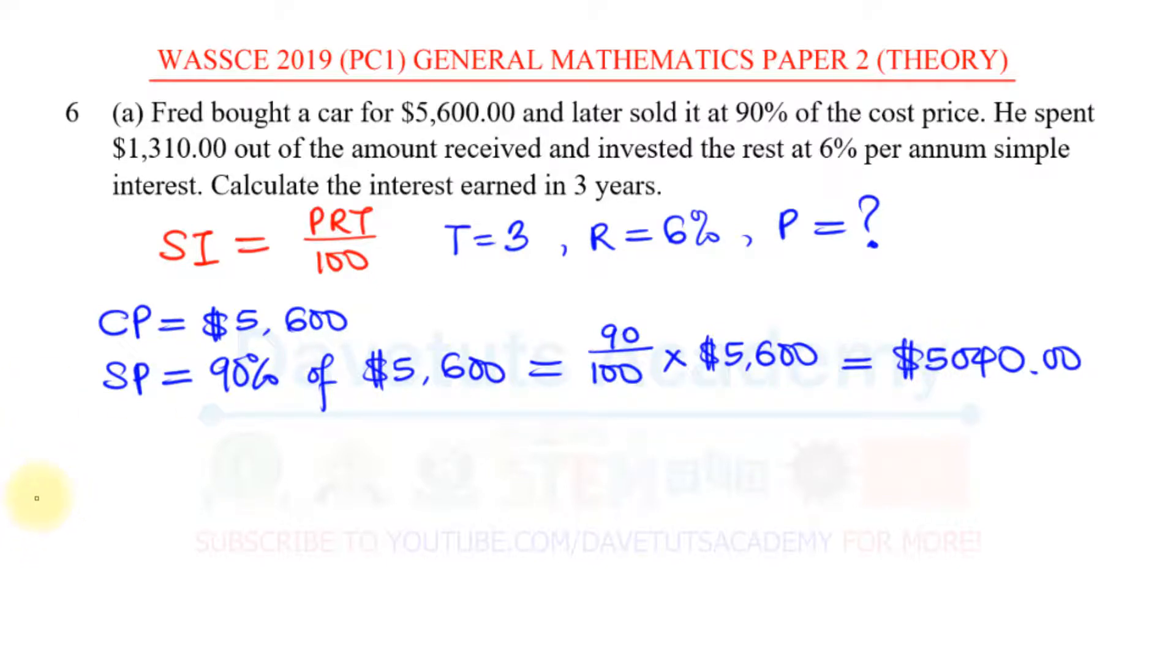We have $5,040. Now, we are told that out of the money that he got for the sale of the car, he spent $1,310. He just spent it and enjoyed himself a bit.